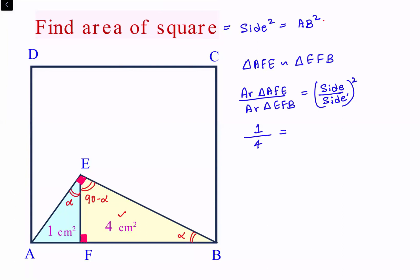The side I am taking is AE, so in the other triangle I have to take EB. So this is AE upon EB whole squared.